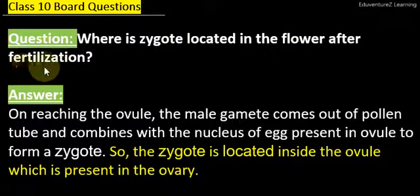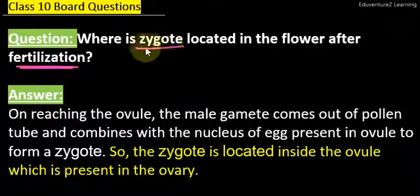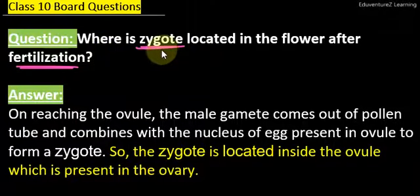Plants mein jo fertilization hoti hai, flowers mein jo fertilization hoti hai, us mein zygote jo form hota hai, wo plants mein kaha pe location hai, usne kaha pe hota dekha jata hai.